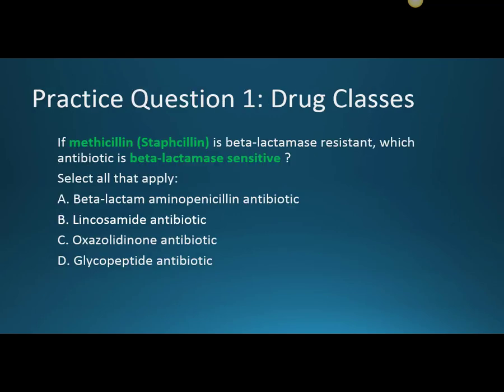Practice question one, looking at the drug classes: if methicillin, brand Staphicillin, is beta-lactamase resistant, which antibiotic is beta-lactamase sensitive — select all that apply. The beta-lactam aminopenicillin antibiotic amoxicillin is beta-lactamase sensitive — that enzyme that attacks the beta-lactam ring will destroy the aminopenicillin. The other ones are not beta-lactam antibiotics, so that begs the question of what these other ones are good for and what issues we'll see with them, because these don't group as neatly as amoxicillin or other penicillins.